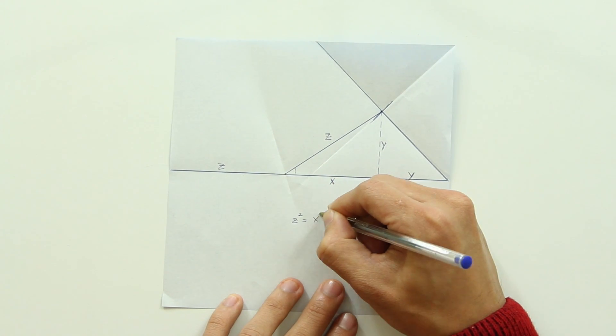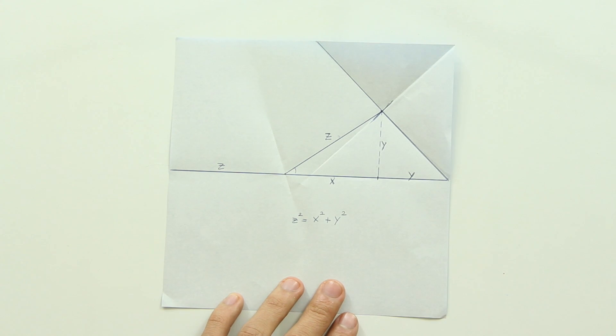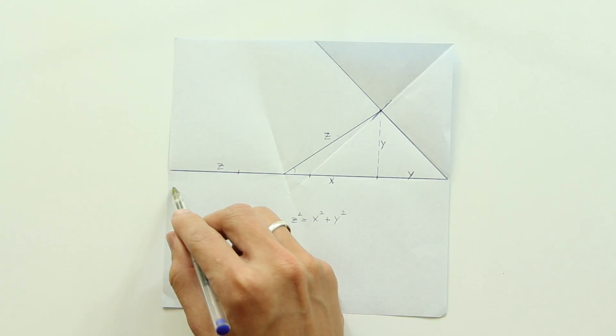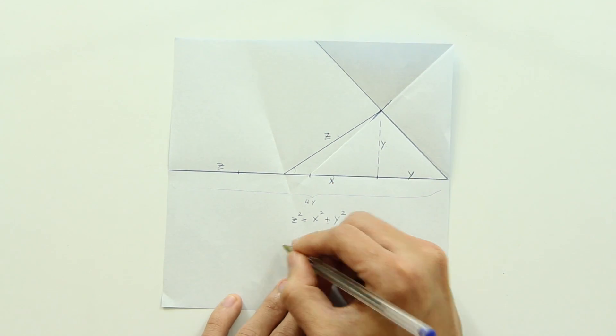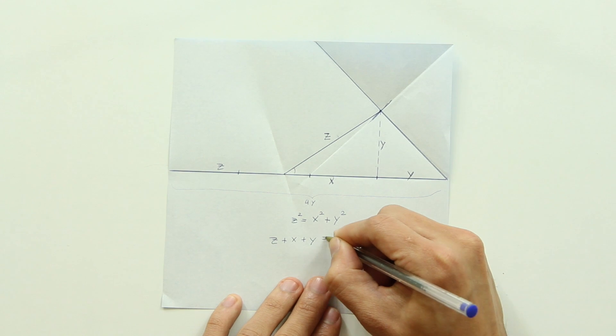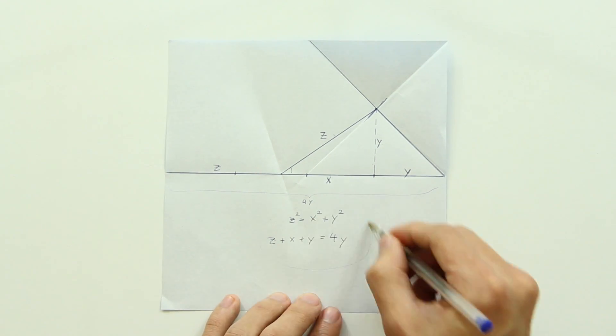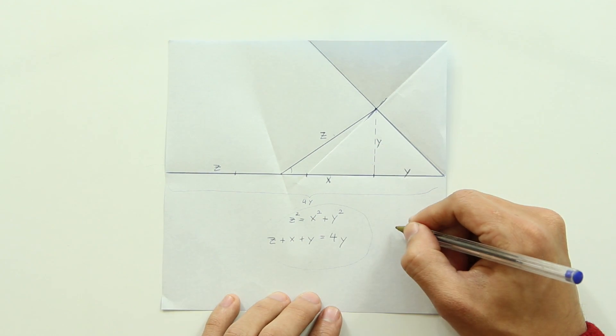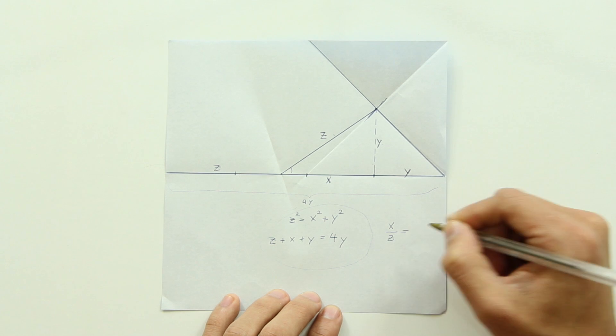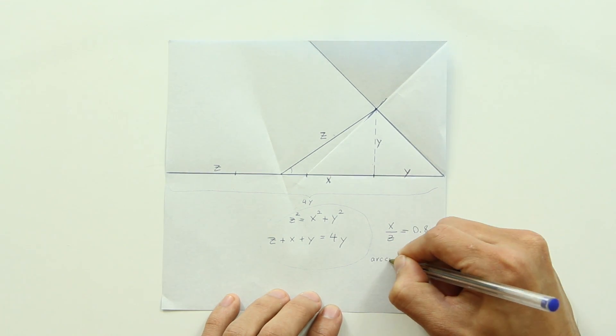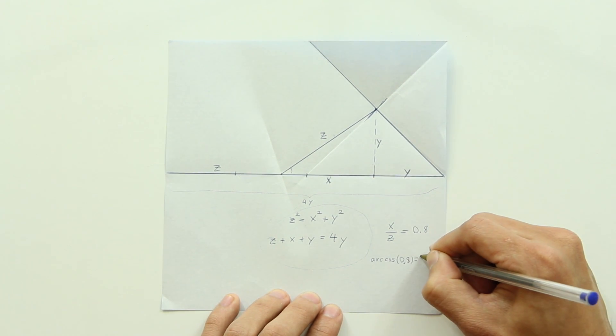Now you have z square equals x square plus y square. And also, z plus x plus y equals 4y. By using this system, you can find that x divided by z equals 0.8, and the arc cosine of 0.8 is about 36.87 degrees.